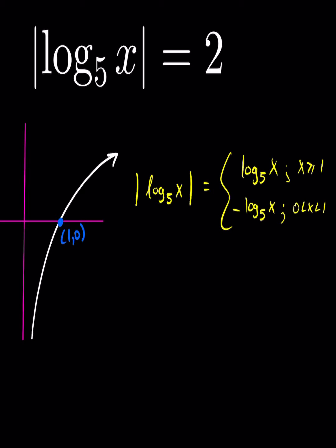Taking a look here we have a graph of log base 5 of x. You can see that your logarithmic function does go positive and negative.